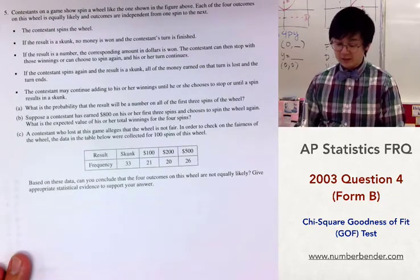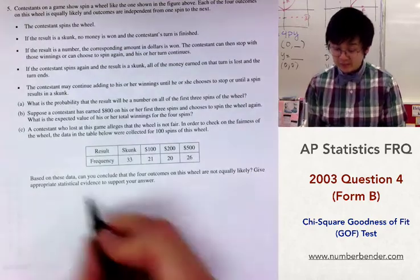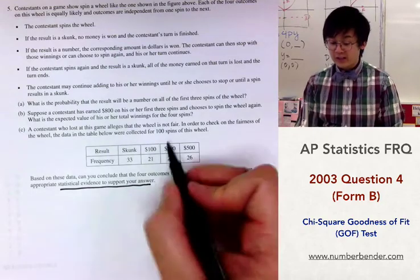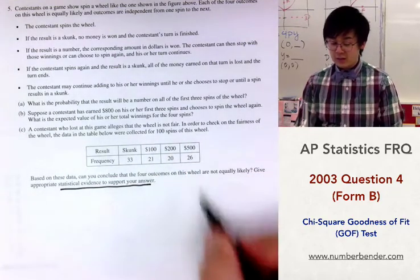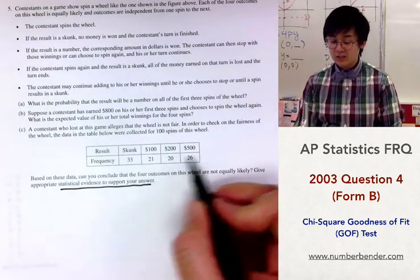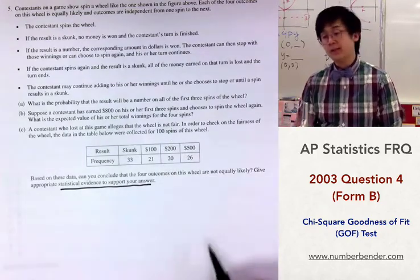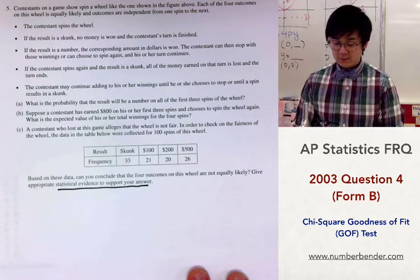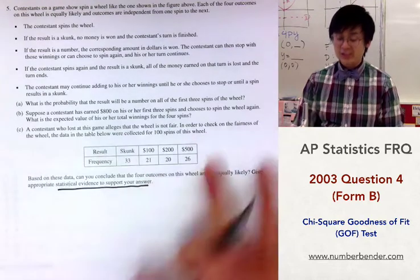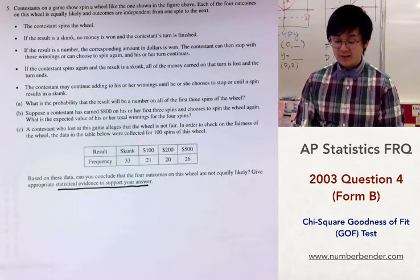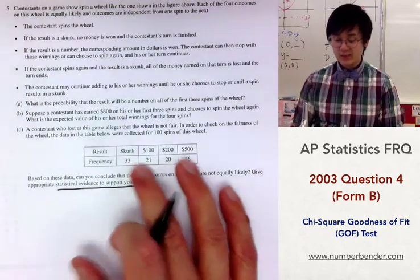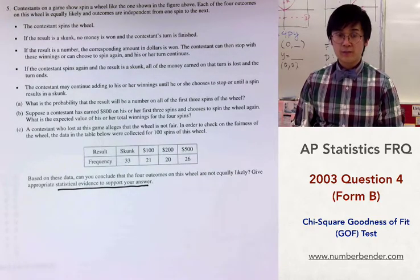For part C, we need to conduct a statistical test to find evidence supporting whether the wheel is fair, using the frequency table of skunk, $100, $200, and $500 outcomes over 100 spins. We'll use the chi-square goodness of fit test and conduct a complete hypothesis test with this model. Let's start with our hypotheses.